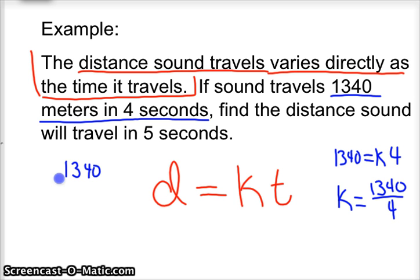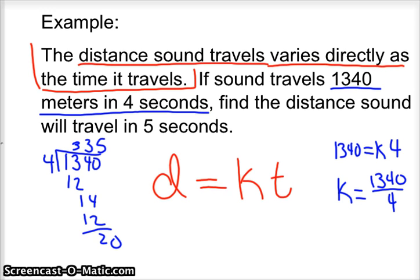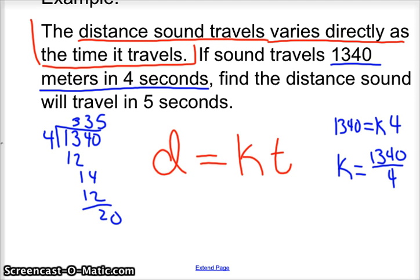So 1,340 divided by 4... 3, 12, 14, 3 again, 12, 20, and then 5. So the speed of sound is 335 meters per second. All you really need to know is k is 335.